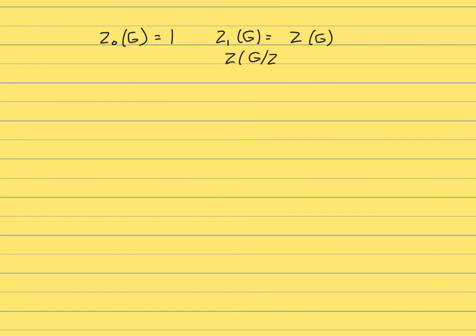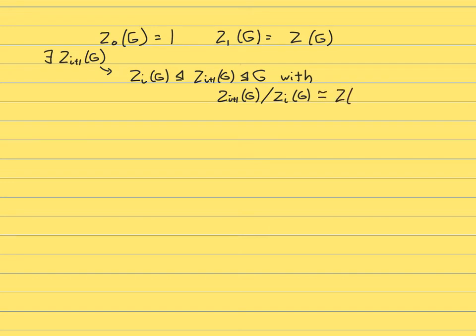And then assuming you've already defined Z_i of G, it follows from one of the isomorphism theorems that there exists a Z_{i+1} of G that contains Z_i of G as a normal subgroup. Such that when you take the quotient, you get something that's isomorphic to this center.